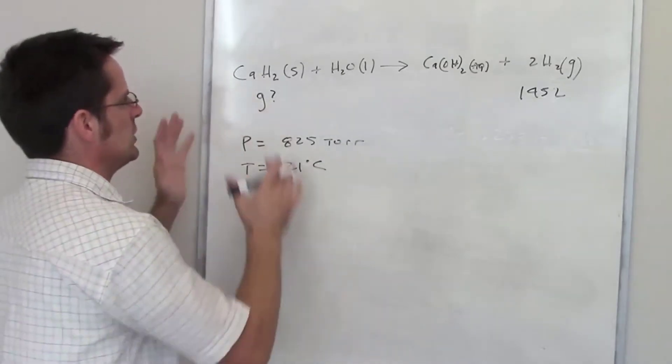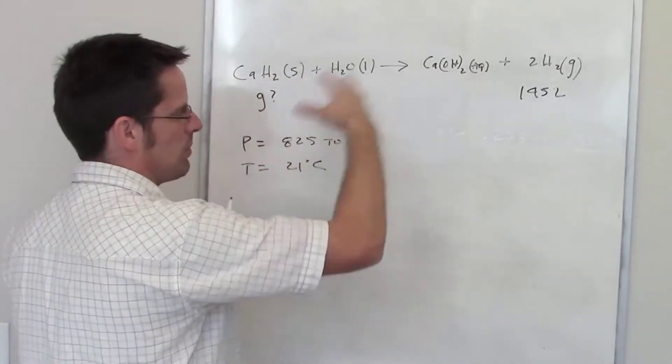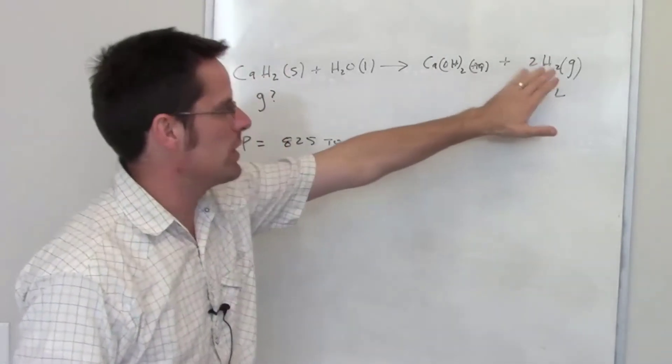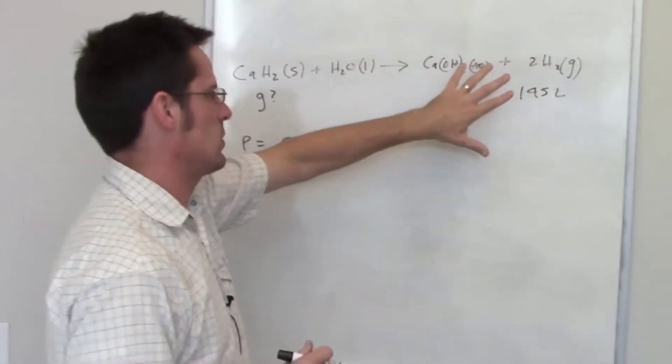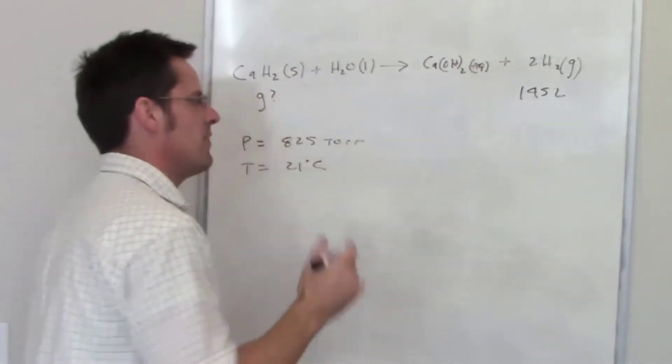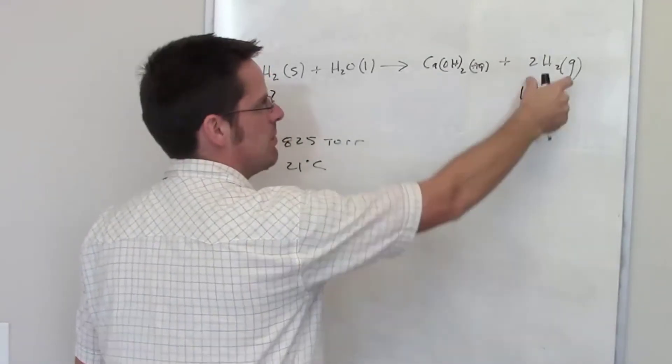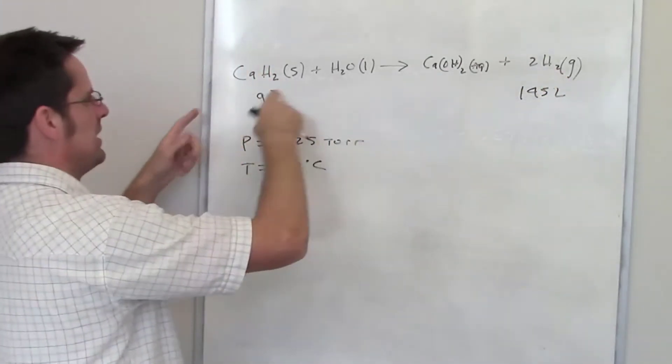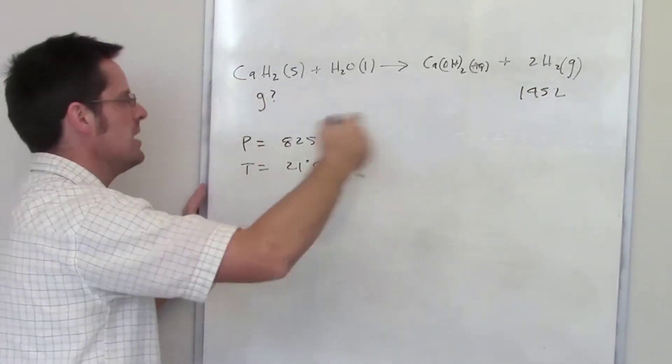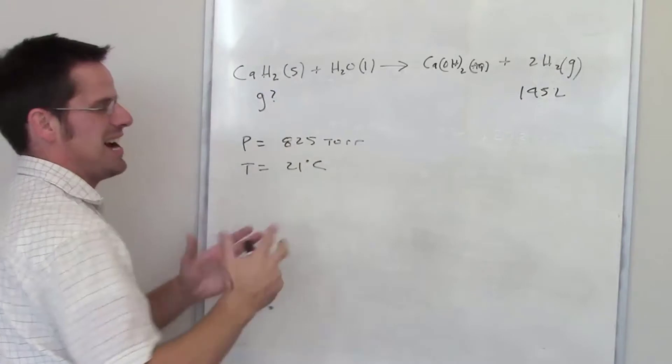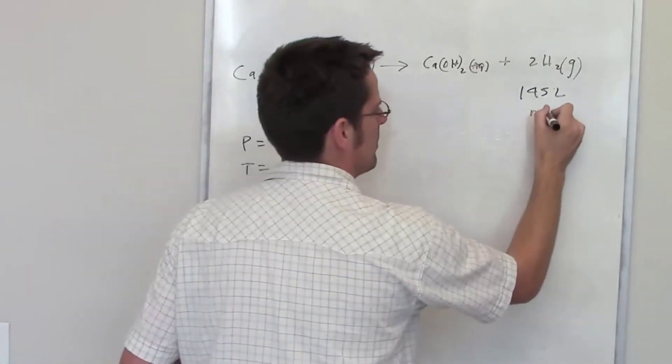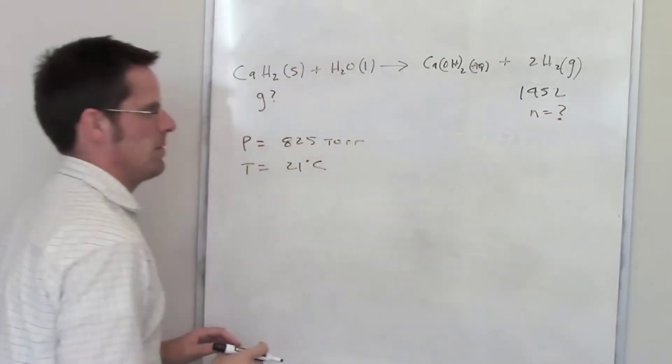Whenever we're looking at any equation where I'm going from one reactant or product to another, the thing that I really need to do is determine the number of moles. If I knew the number of moles of hydrogen here, I could back calculate how many moles of calcium hydride I would need to produce that many moles of hydrogen. Once I have the number of moles of calcium hydride, I can convert that into grams of calcium hydride.